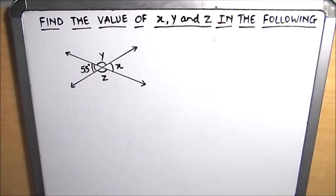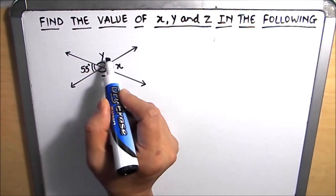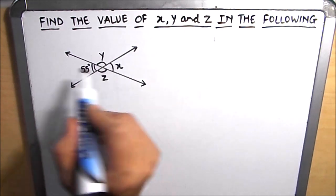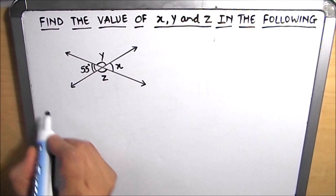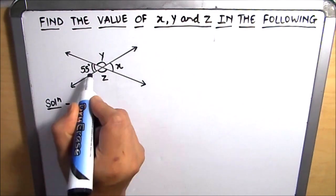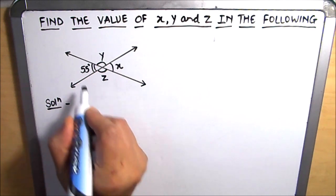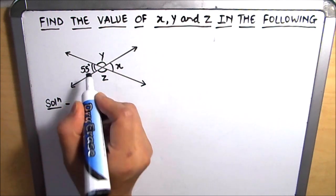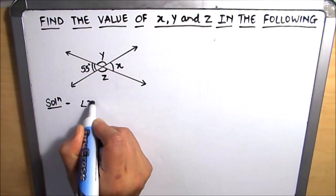Hello everyone. Today in this video we are going to learn how to find the value of the angles x, y, and z in the following picture. Let's get started with the solution. Out of the four angles, only one angle is known to us, which is 55 degrees.